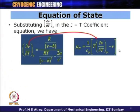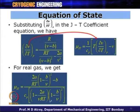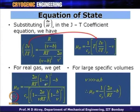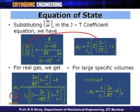Substituting del V by del T at constant pressure into the JT coefficient equation for a real gas, and approximating for large specific volume V compared to A and B, mu_JT simplifies to (1/Cp)(2A/RT − B). The sign of mu_JT is determined by the bracket (2A/RT − B), since 1/Cp is always positive.